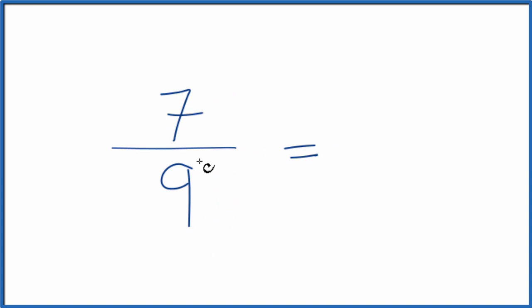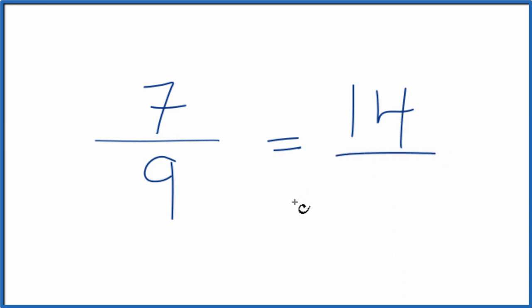So we could just double 7 and 9. 7 times 2 is 14, and 9 times 2 is 18. So that's an equivalent fraction for 7/9.